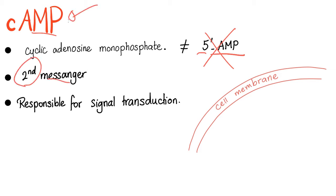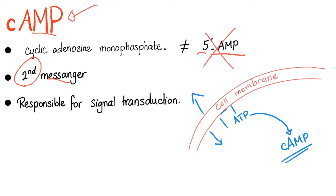So where is the first messenger? On the inside of the cell membrane, something will happen that will trigger a cascade. ATP is converted into cyclic AMP, and cyclic AMP is said to be the second messenger. The first messenger is whatever happened on the outside of the membrane.